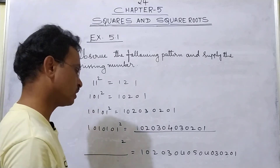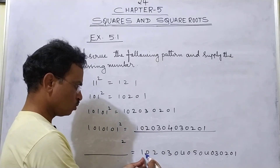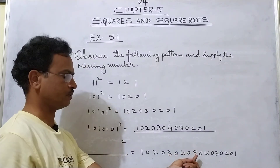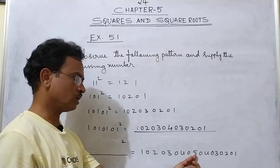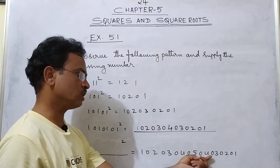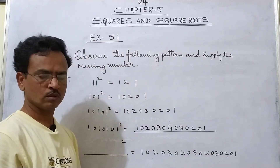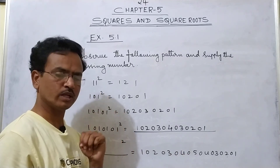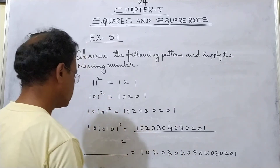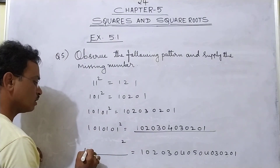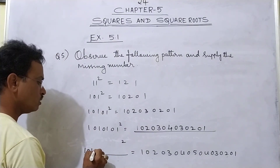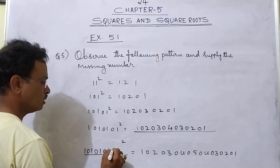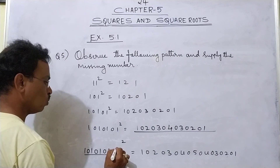Now we have finished the right-hand side. Now see here: 1, 0, 2, 0, 3, 0, 4, 0, 5 — till 5 is given, so the highest is 5. Then this all reverses. That means how many 1's we have to take here? 5 ones. First you write 1, 0, 1, 0, 1, 0, 1, 0, 1.